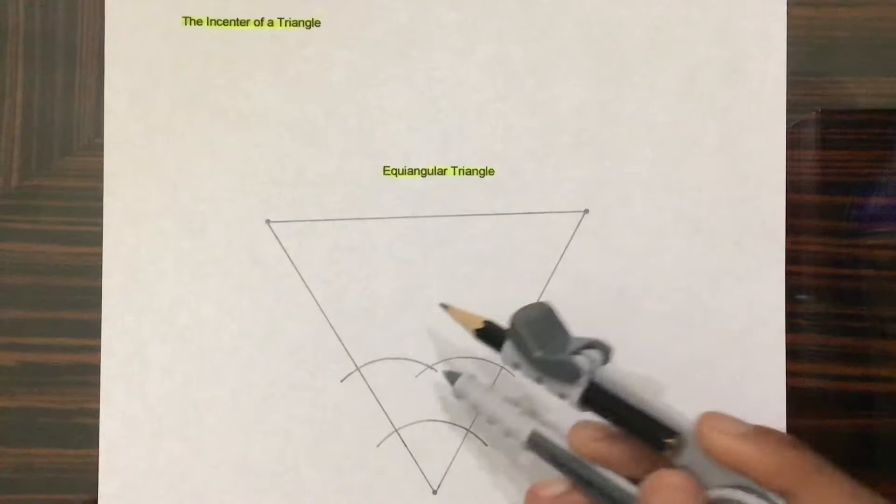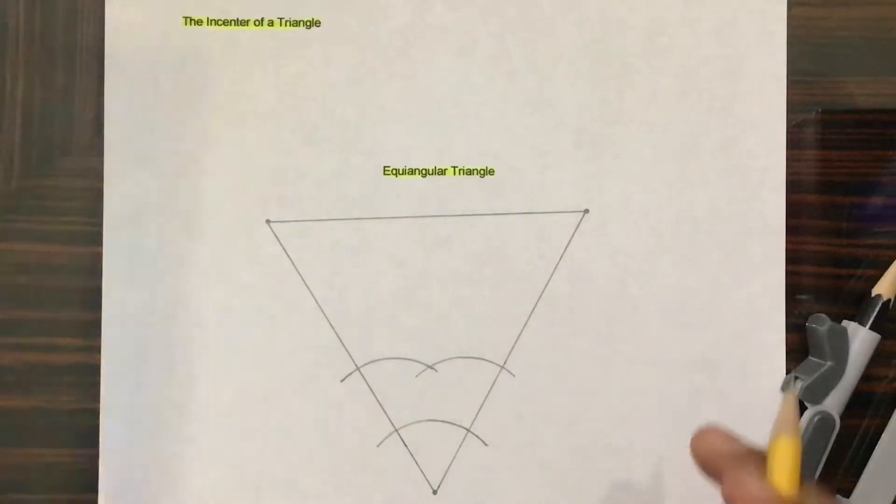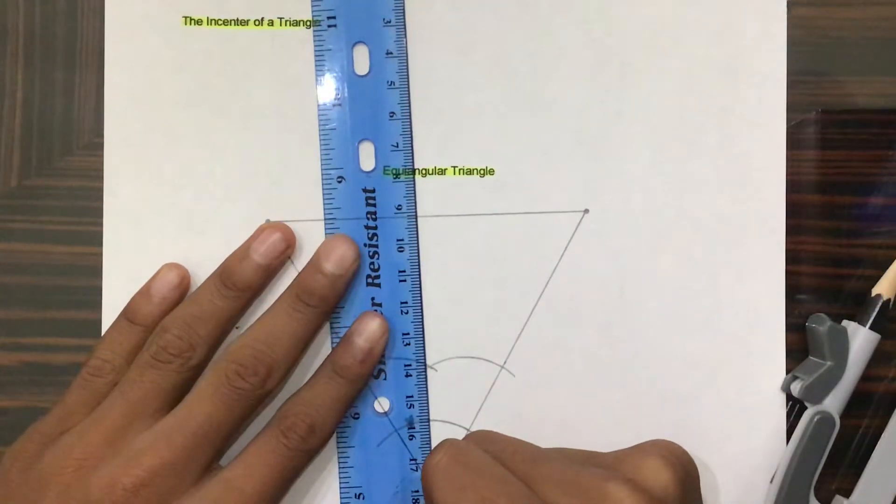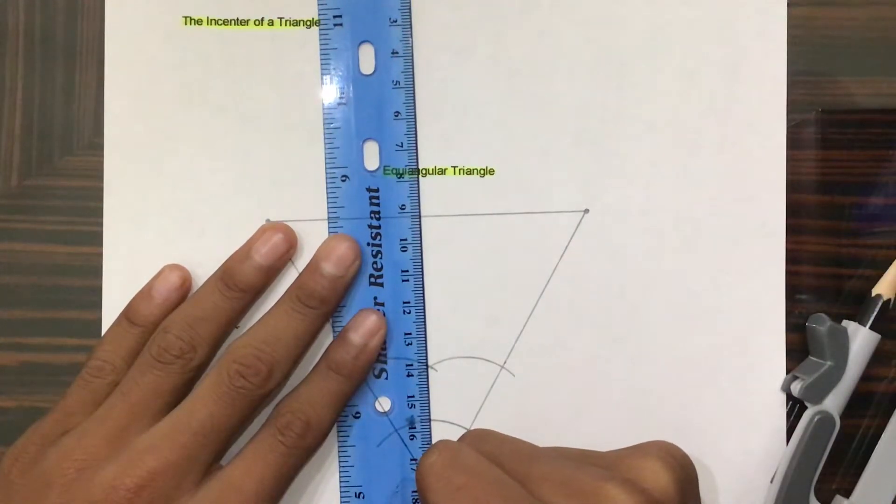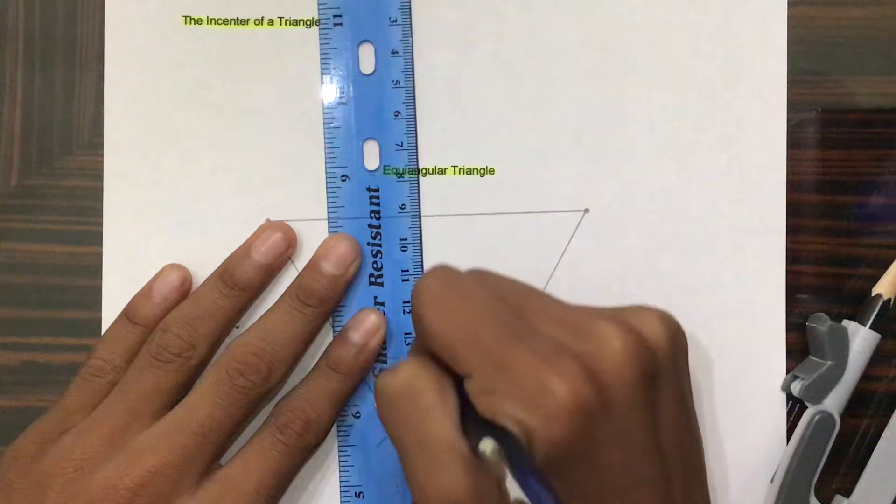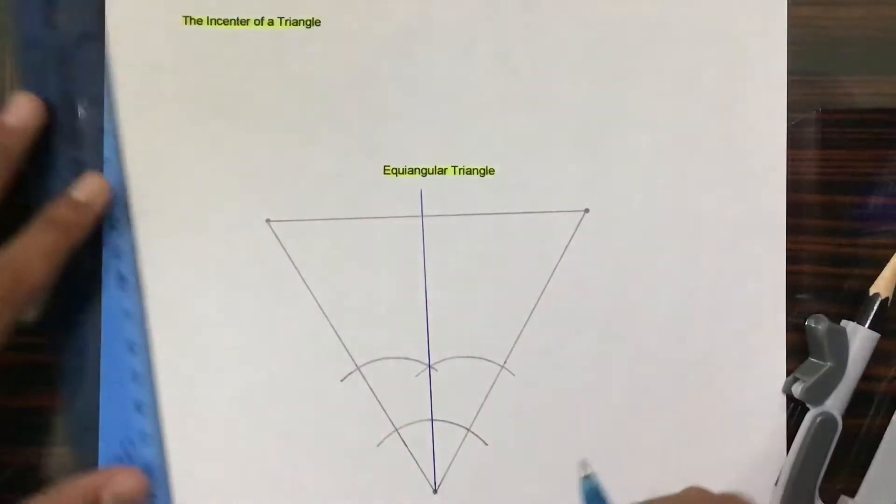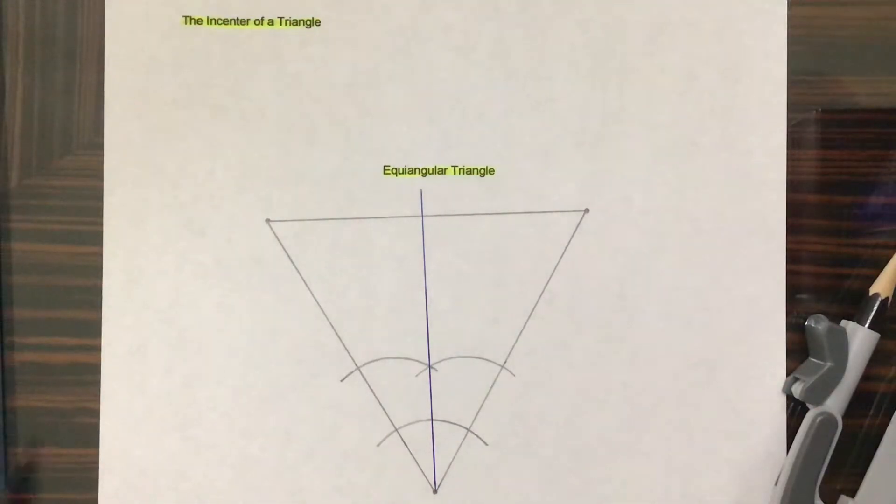As you can see, they intersect at one point. And this point will be the useful point for this bisector. And we have created bisector number one for the first vertex.